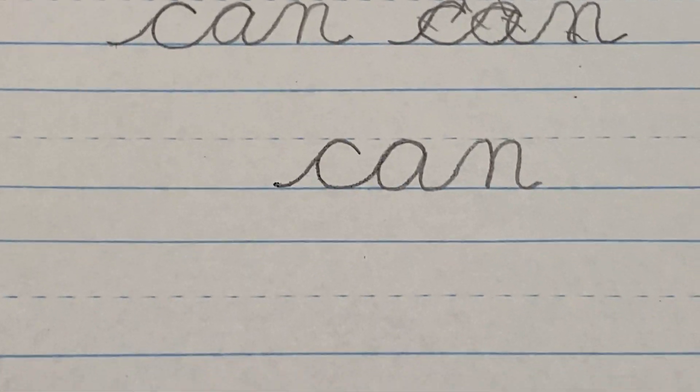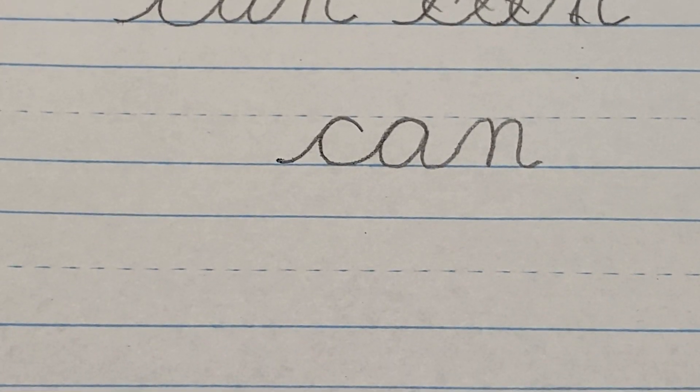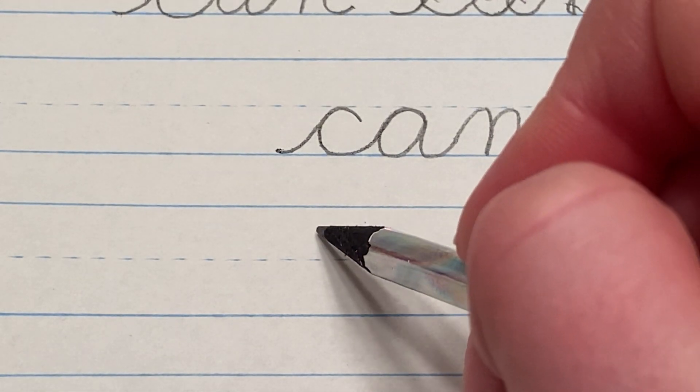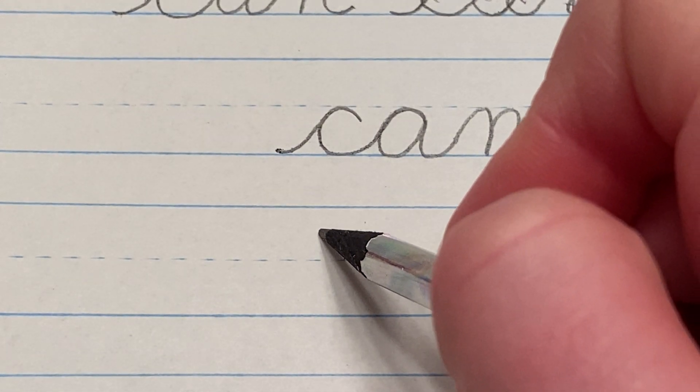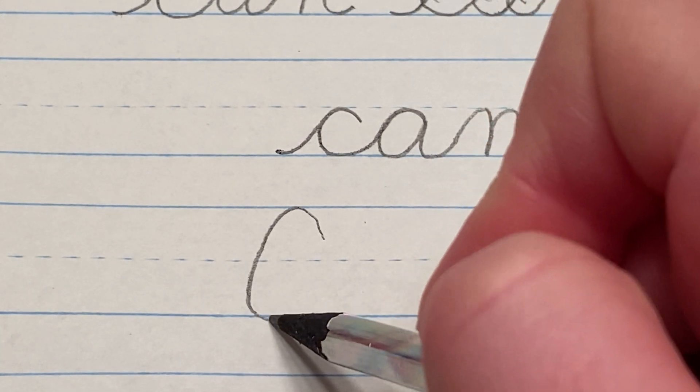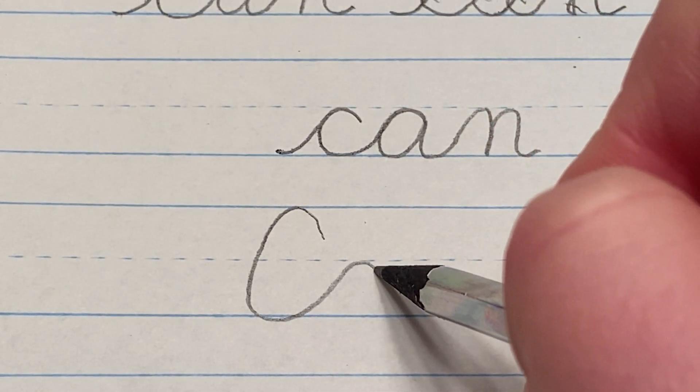You may need to write this starting with a capital C such as in the sentence, can I come over today? In that case for the capital C you start above the middle and then it goes straight into the A.